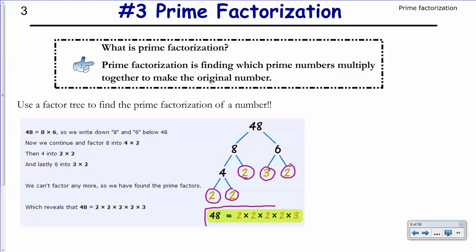So right here, my prime factorization, notice all of my numbers are small numbers. They're going to be small numbers because they're going to be prime numbers. So I have 2 times 2. How many 2's do I have? 1, 2, 3, 4. So I should have 1, 2, 3, 4 2's times 3 is my prime factorization.